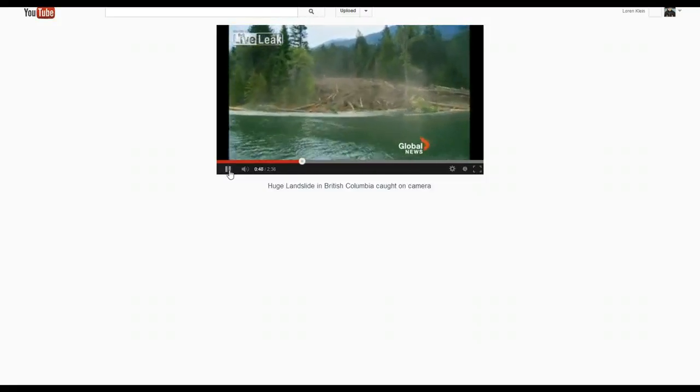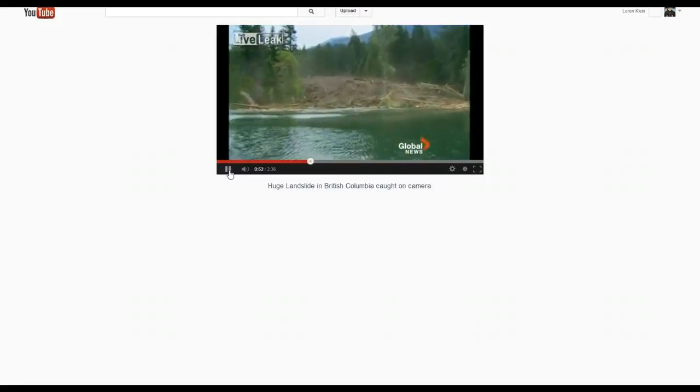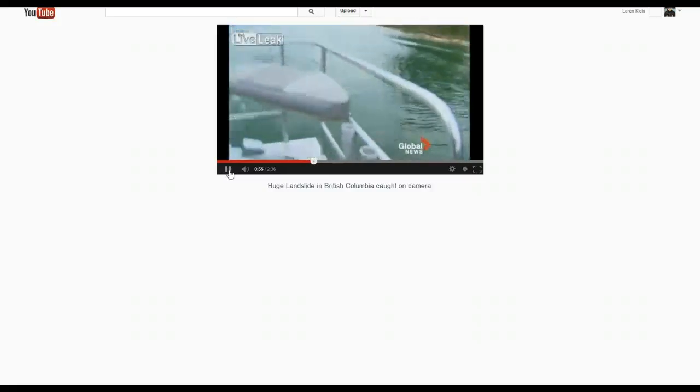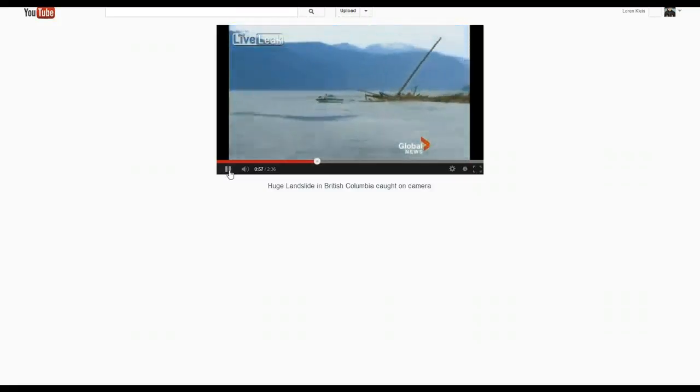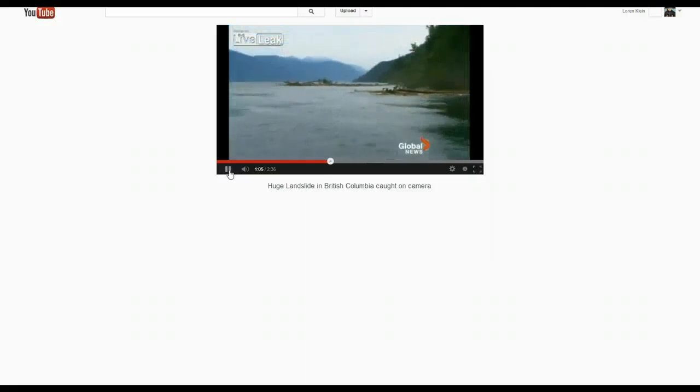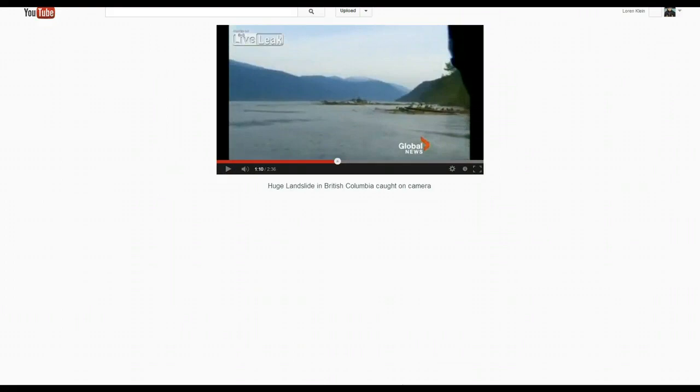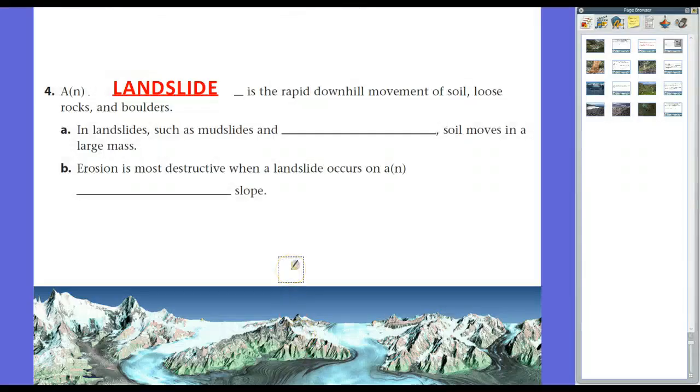And so all those trees used to be standing, but the force of the mass of the earth being pushed out pushed them away. And see, there's some other reporters getting away in their boat. And yes, those trees were on the hill previously before they got pushed out by the landslide. And that's the waves that you see coming in as a result of that. Now, in landslides, such as mudslides and even rockfalls, soil moves in a large mass. As you just saw in that, it was just a huge wall of dirt just coming down the hill.